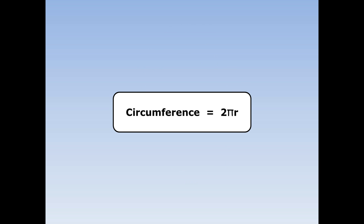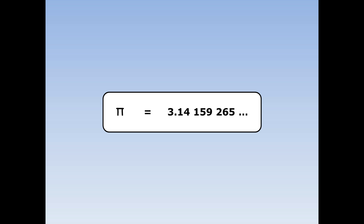To find the circumference of a circle, we use the formula: circumference equals 2 pi r. This means 2 times pi times the radius. Pi is a number that goes on forever, but it starts off 3.14159265. In these questions, we're going to round pi off to 3.14.